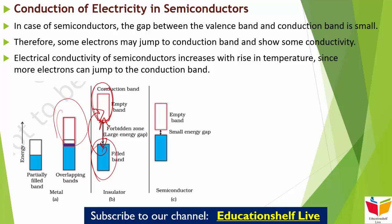कुछ substances होते हैं जैसे silicon और germanium जो इस type का behavior दिखाते हैं, इसलिए हम उन्हें intrinsic semiconductors बोलते हैं। Now the conductivity of these intrinsic semiconductors is too low to be of practical use। इनकी conductivity को हम increase कर सकते हैं अगर हम कुछ amount की suitable impurity इसमें add कर दें — इस impurity add करने के procedure को हम doping बोलते हैं।